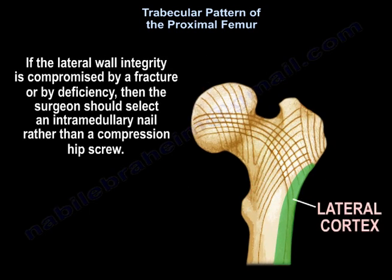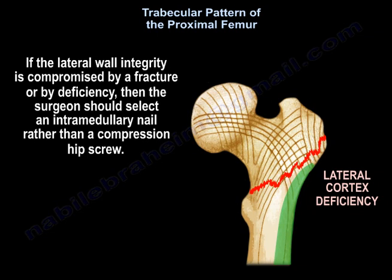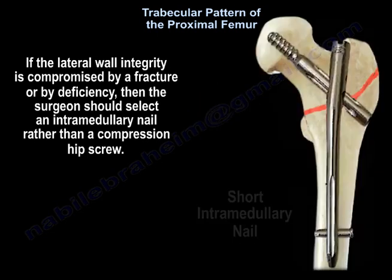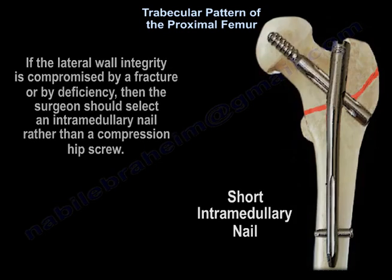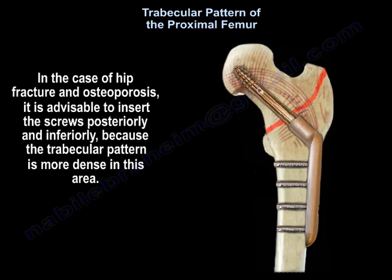If the lateral wall integrity is compromised by a fracture or by deficiency, the surgeon should select an intramedullary nail rather than a compression hip screw. In cases of hip fracture and osteoporosis, it is advisable to insert the screws posteriorly and inferiorly, because the trabecular pattern is more dense in this area.